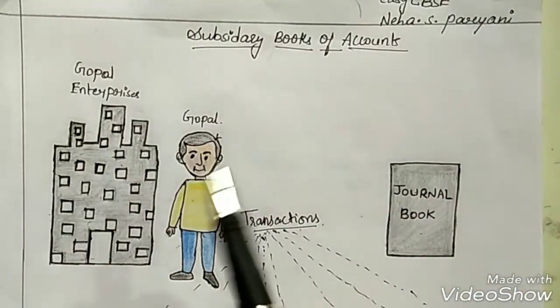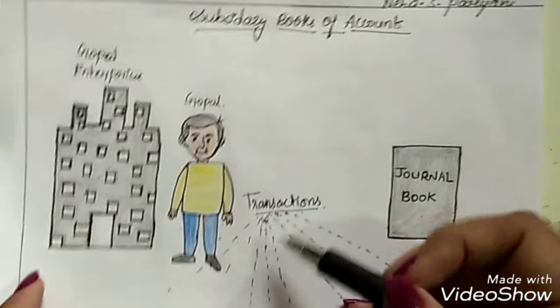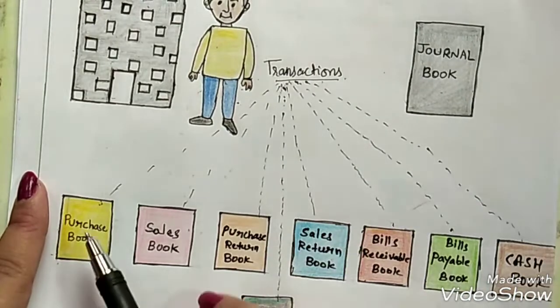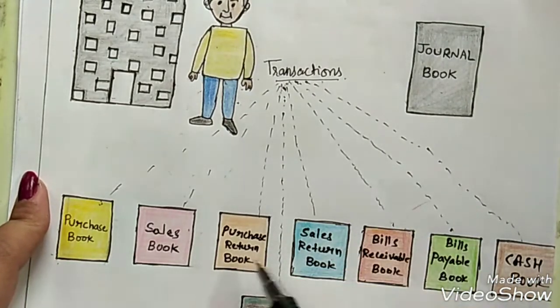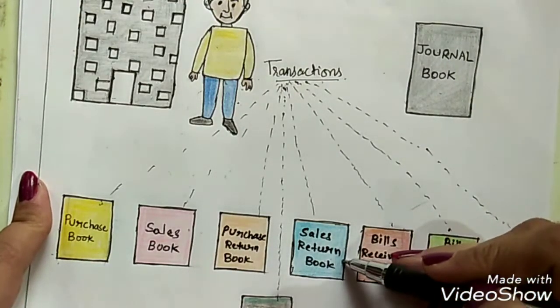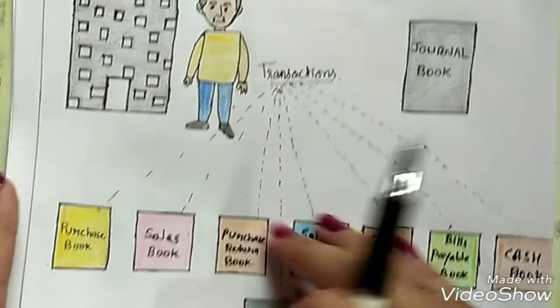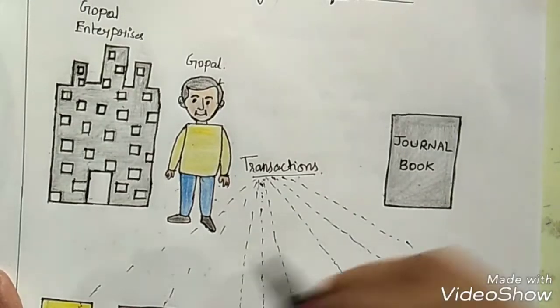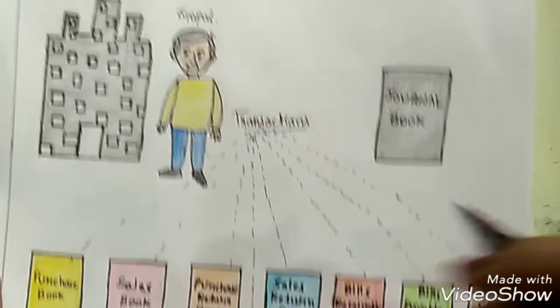Hey guys, I am Neha Pariani, welcome back to my channel. In this video we are going to learn about bills receivable book, bills payable book, and problems relating to it. In my previous session we discussed subsidiary books — there are eight types, and we already covered purchase book, sales book, purchase return book, and sales return book. I'll give you the link to that previous video at the end of this one.